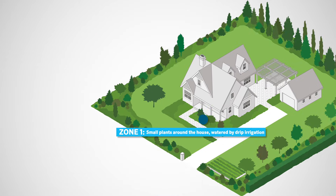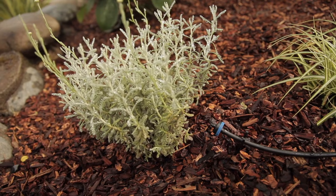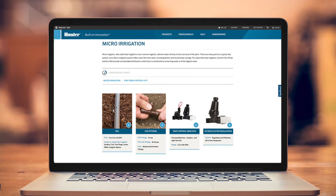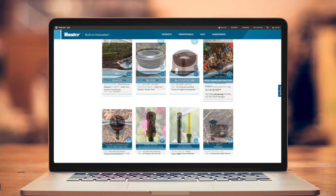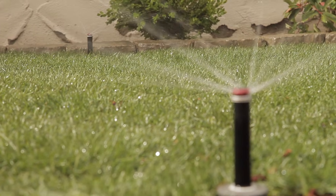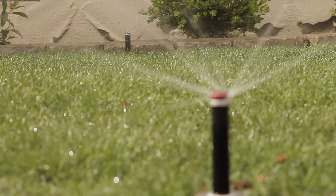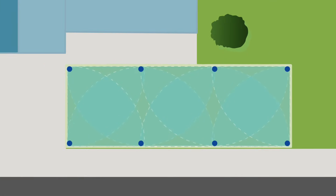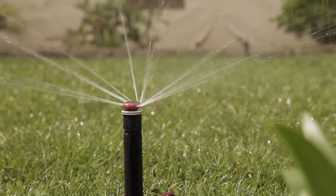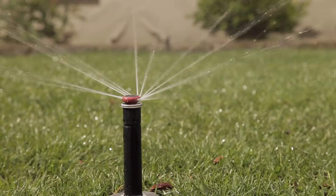In this example, Station One is a PCZ drip control zone kit that includes a filter and pressure regulator. It's important to use a filter and pressure regulator when installing micro-irrigation components, as they require lower operating pressures and have small openings that could become clogged with debris in the water. Station Two is an example of an MP rotator zone with head-to-head coverage. Head-to-head means that the heads are spaced so that one head's water throw reaches the adjacent head, resulting in even coverage so that all plant material in the zone receives the same amount of water.